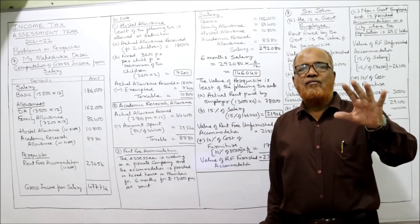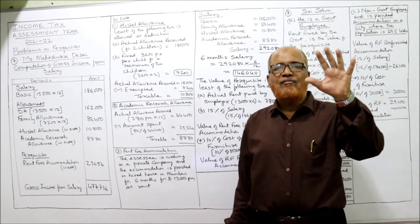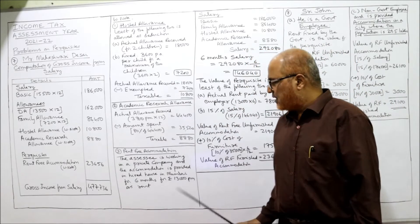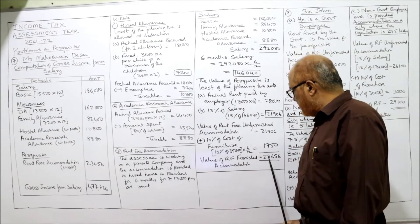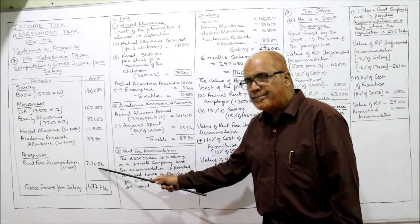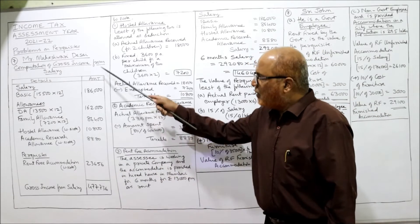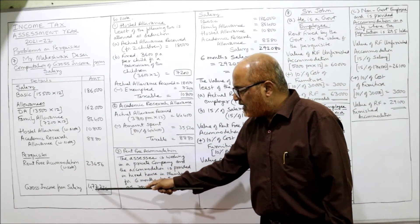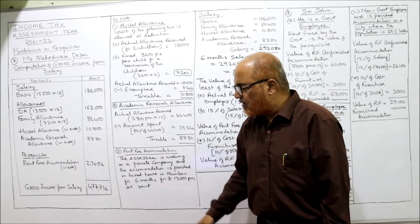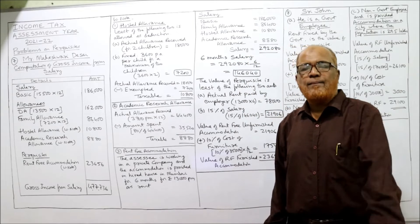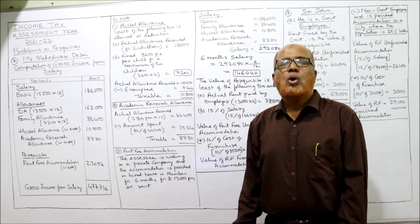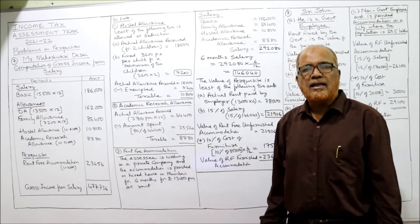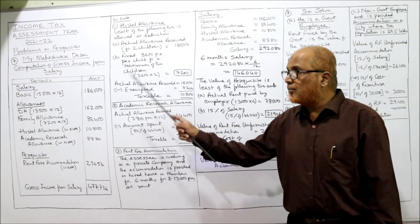Value of rent-free furnished accommodation = 23,656. Take this in the main computation. The total gross income from salary = 4,77,736. This is the answer for problem number 7.